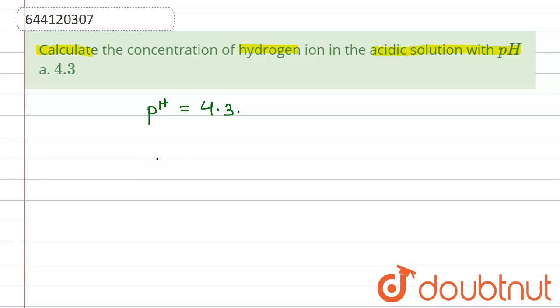So we know that pH is equal to, we can write, minus of log H+. Right. So from here, if we put the value, so we have value of pH that is 4.3.